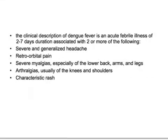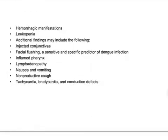The clinical description of dengue fever is an acute febrile illness of two to seven days duration associated with two or more of the following: severe generalized headache, retro-orbital pain, severe myalgias especially of the lower back, arms, and legs, arthralgias usually of the knees and shoulders, characteristic rash, and hemorrhagic manifestations with leukopenia. Additional findings include infected conjunctiva, facial flushing, inflamed pharynx, lymphadenopathy, nausea, vomiting, and non-productive cough.